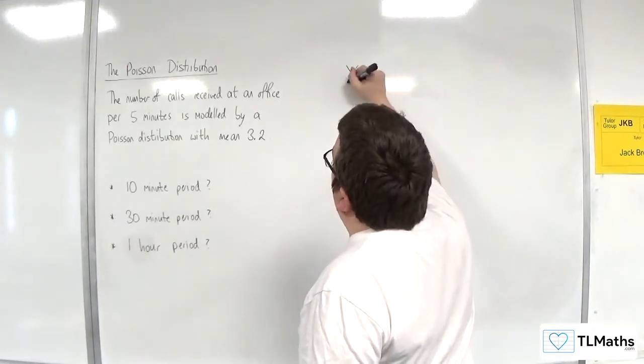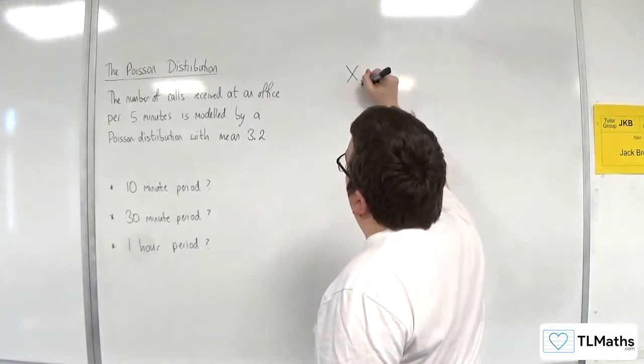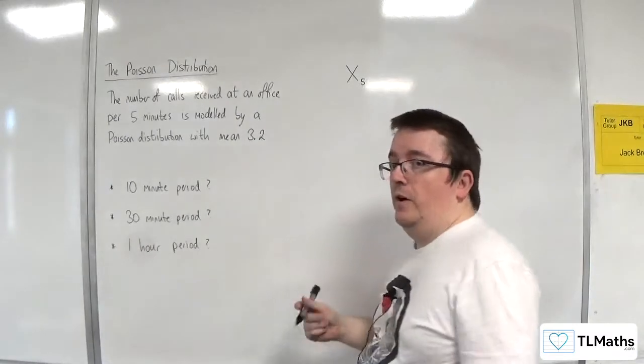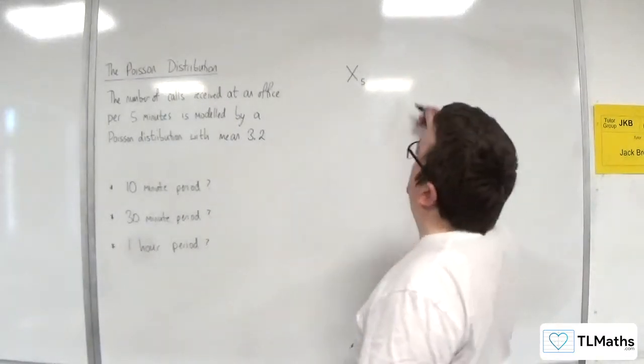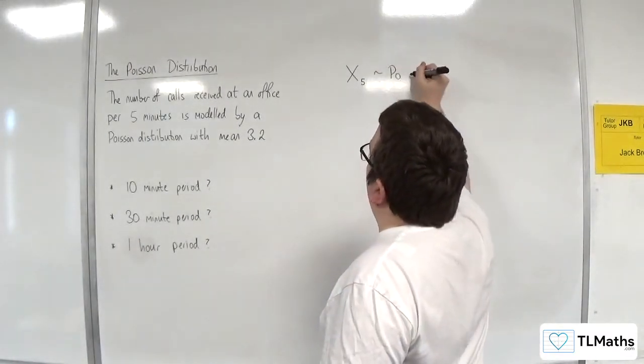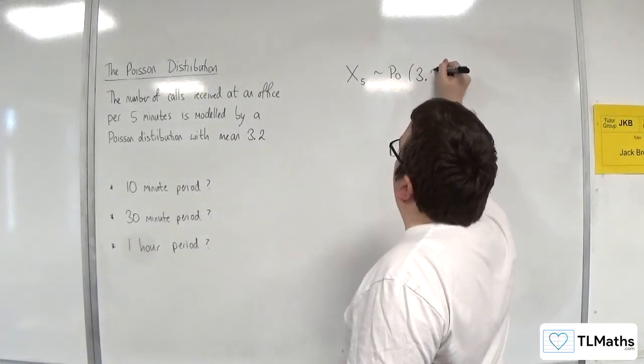So let's write that down as x, and I'm going to write it with a 5 next to it, just to identify that this is a five-minute period, is a Poisson distribution with a mean of 3.2.